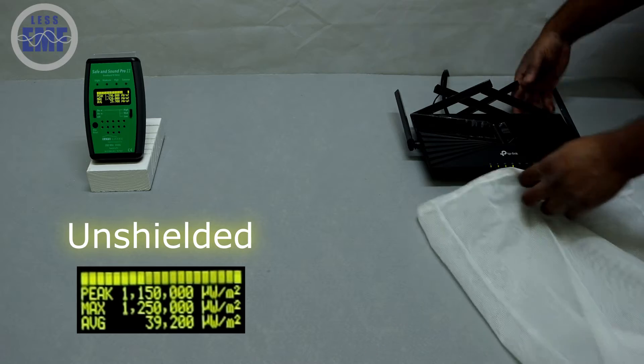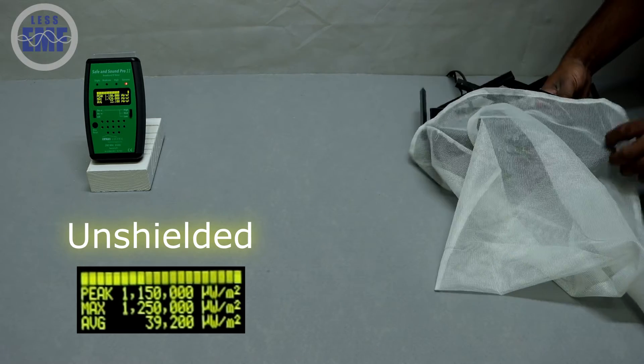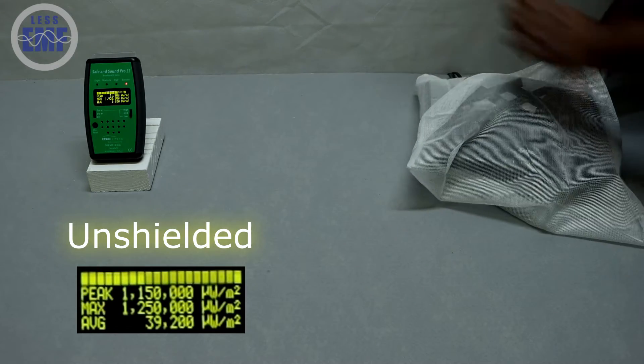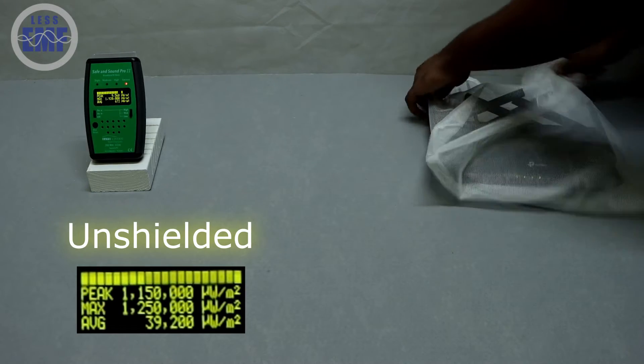Now, we'll place the regular strength signal tamer over the router. This special mesh cover is designed to reduce radiation by up to 95% while keeping your internet connection intact.